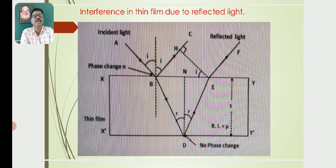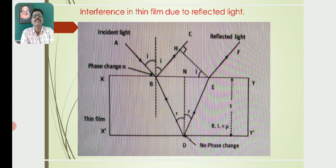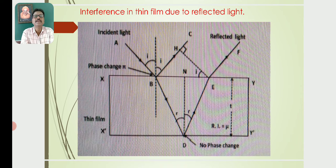Interference in a thin film due to reflected light — the reflected method. Let us consider a thin film with upper surface XY and lower surface X'Y'. A ray of light is incident on the upper surface XY. Part of the incident light gets reflected along BC and part is transmitted along BD, where BC is the reflected ray and BD is the refracted ray.